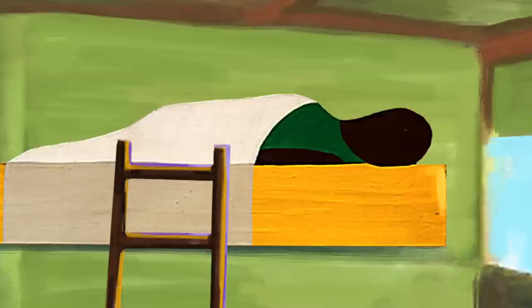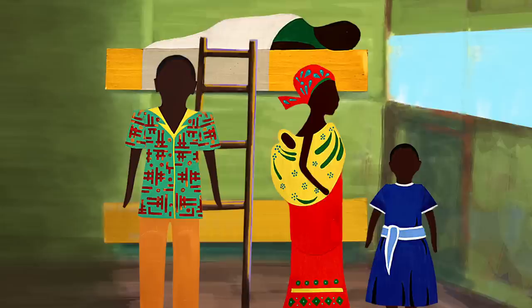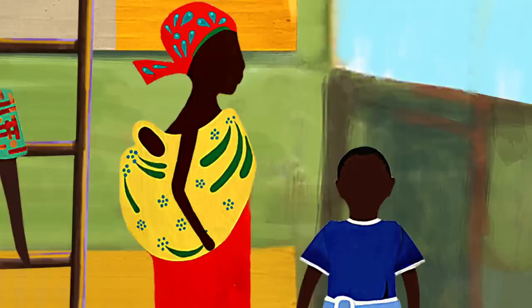A few days later, Kwame wakes with a fever and doesn't want to get out of bed. Mama? Kwame doesn't look good. His eyes are very yellow. My son, how do you feel? I'm very tired and my head hurts. Okay, Kwame. Today you stay home and rest. Hopefully you will feel better tomorrow and be able to go to school. Can I stay home too? No, you are going to school. School is very important.